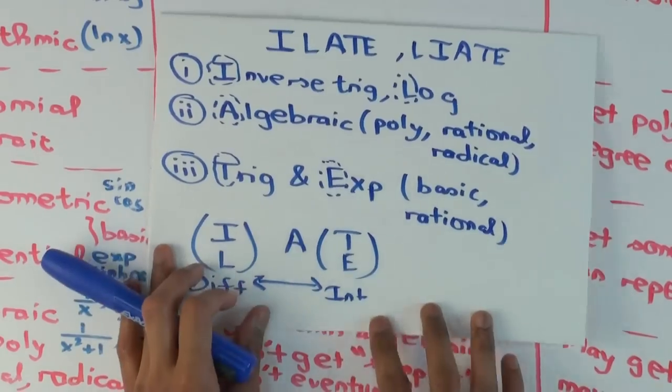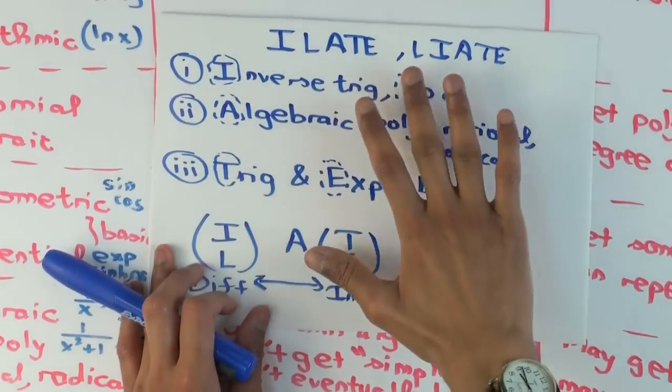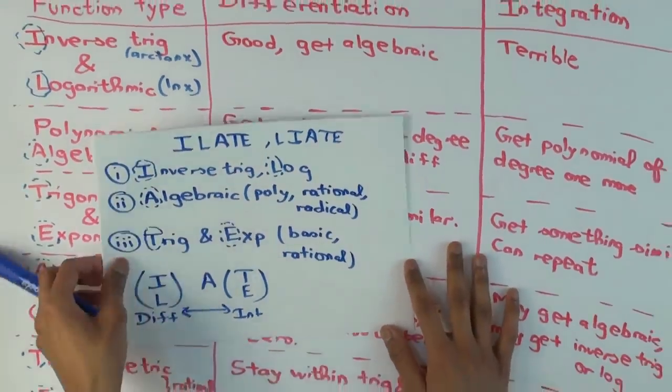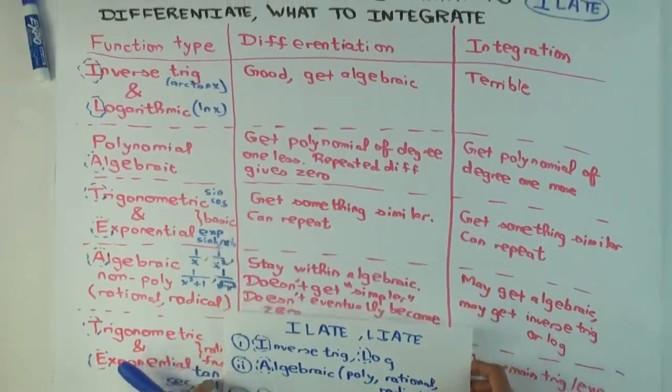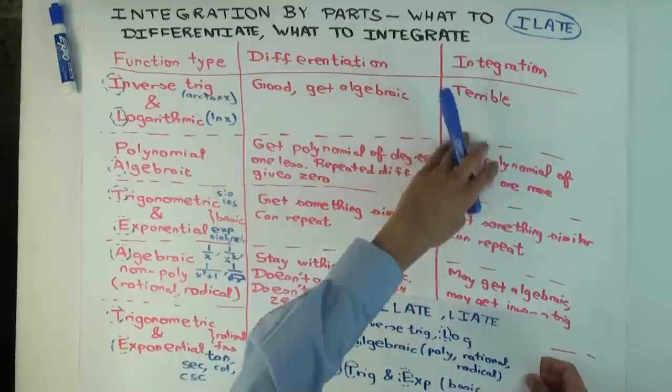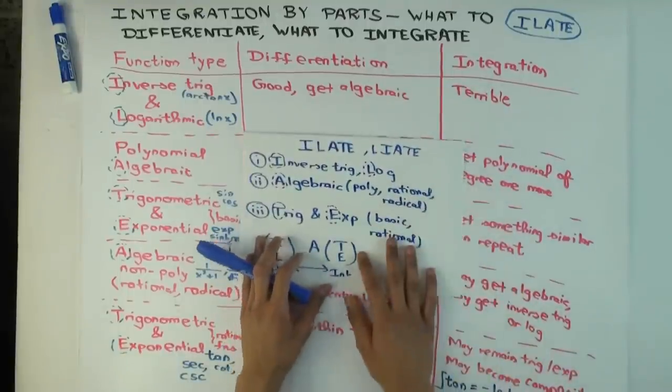There are some subtleties, but let me just quickly explain, I won't go into the full details. I'll quickly explain how this rule follows from the general picture here, where you figure out for each function type how it differentiates, how it integrates.